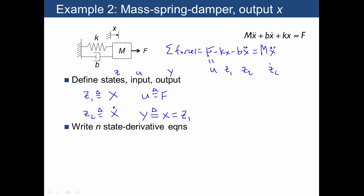And then mx double dot is actually going to be the same as z2 dot. So when we write our state derivative equation, z2 dot is going to be equal to negative k over m times z1 plus negative b over m times z2 plus 1 over m times u.